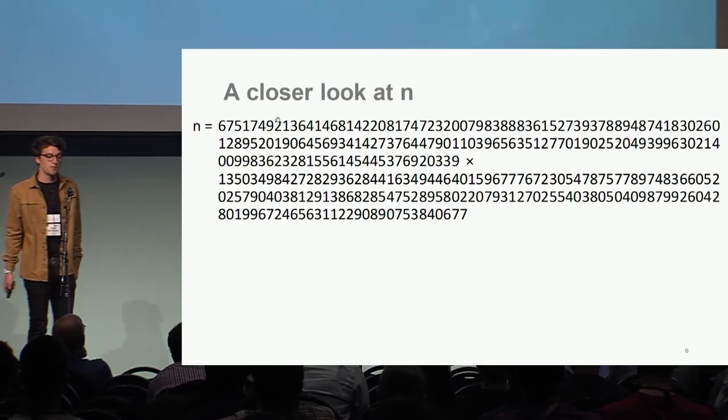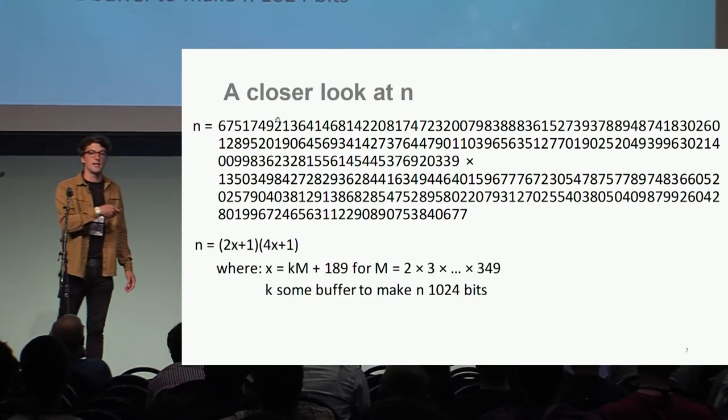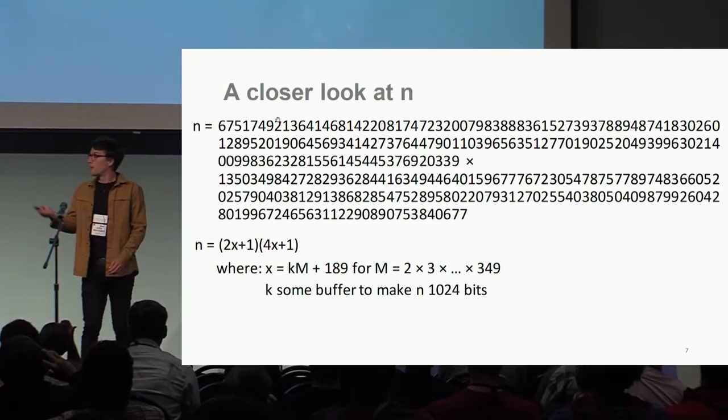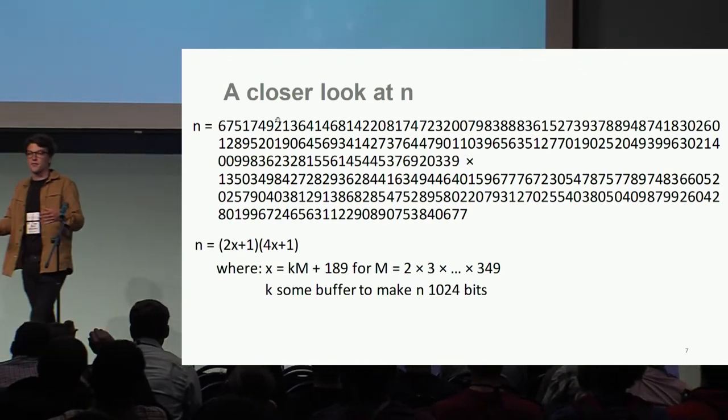It's made of two larger primes. More explicitly, it's of the form n = (2x+1)(4x+1), where x = km + 189, where m is a product of small primes and k is some buffer to get it to the correct bit size.